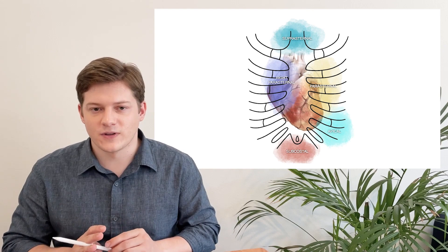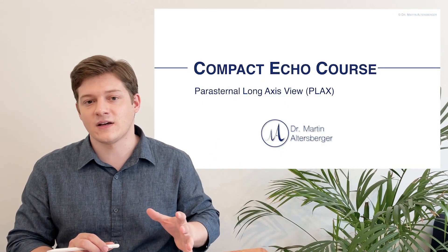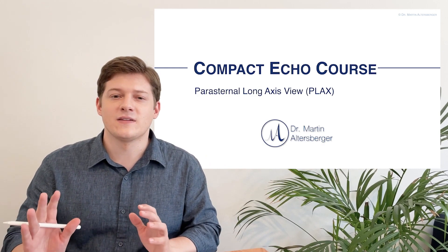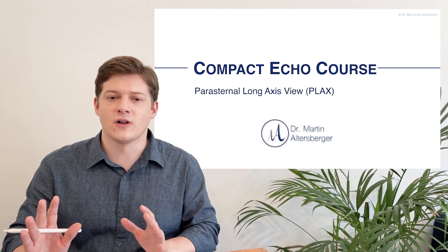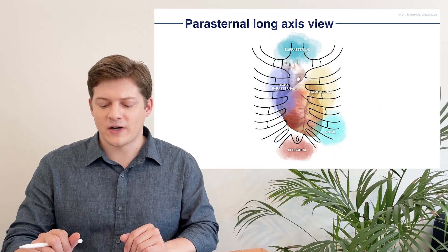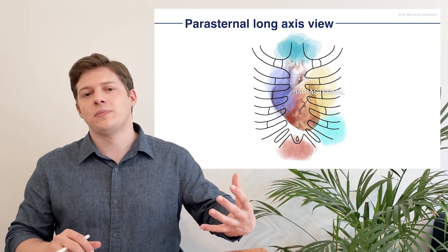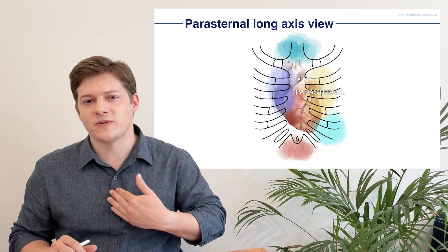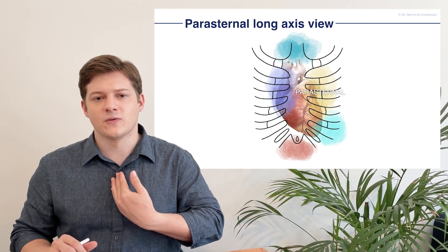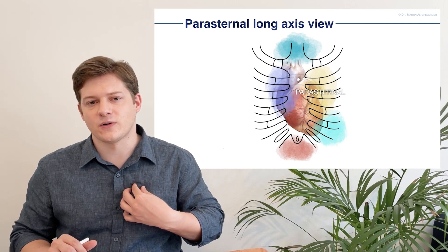Let's start with the first view you always want to start with in a standardized approach in echocardiography — it's the parasternal long axis view. Why parasternal? Of course it is in the name. You place the transducer right beside the sternum. The sternum is a bone located over here and you want to be on the left side of the sternum.